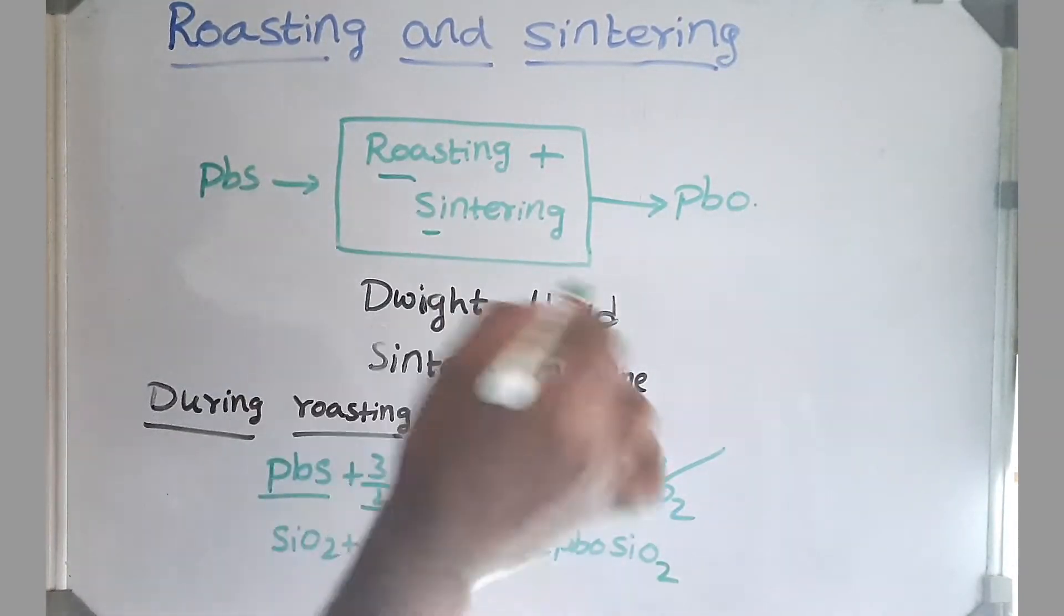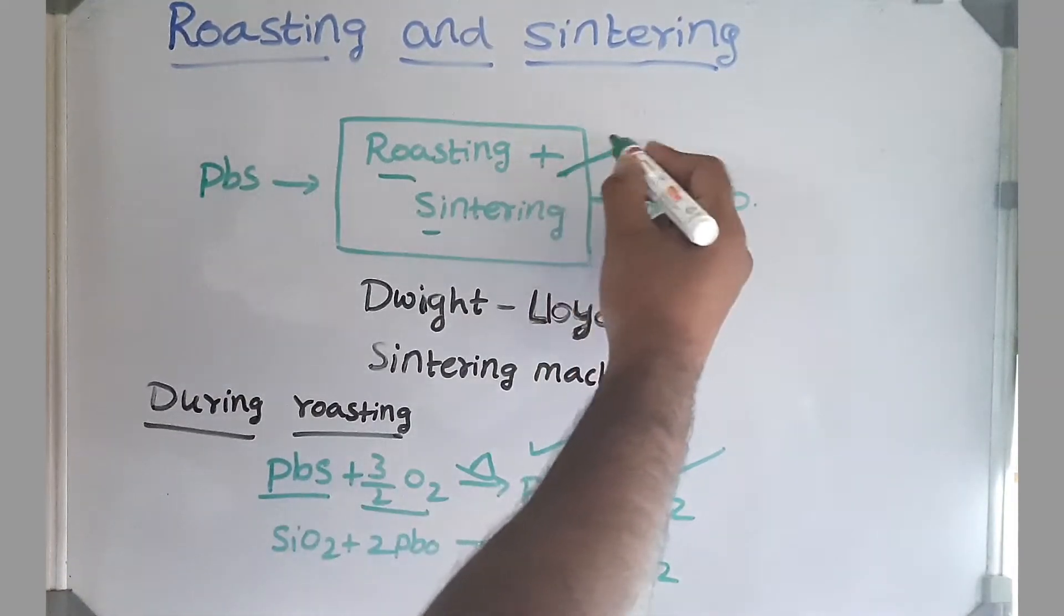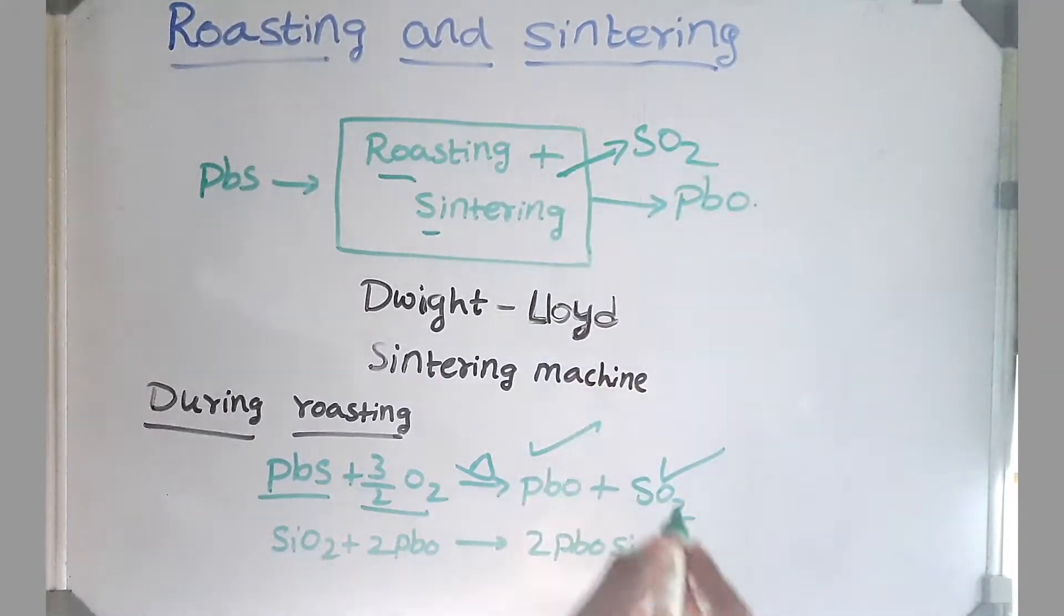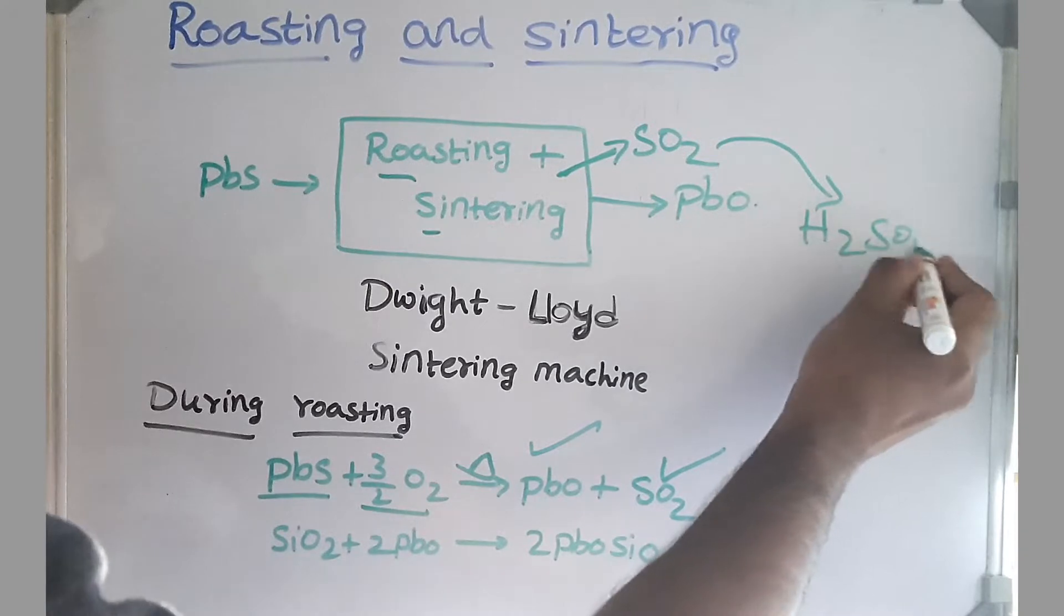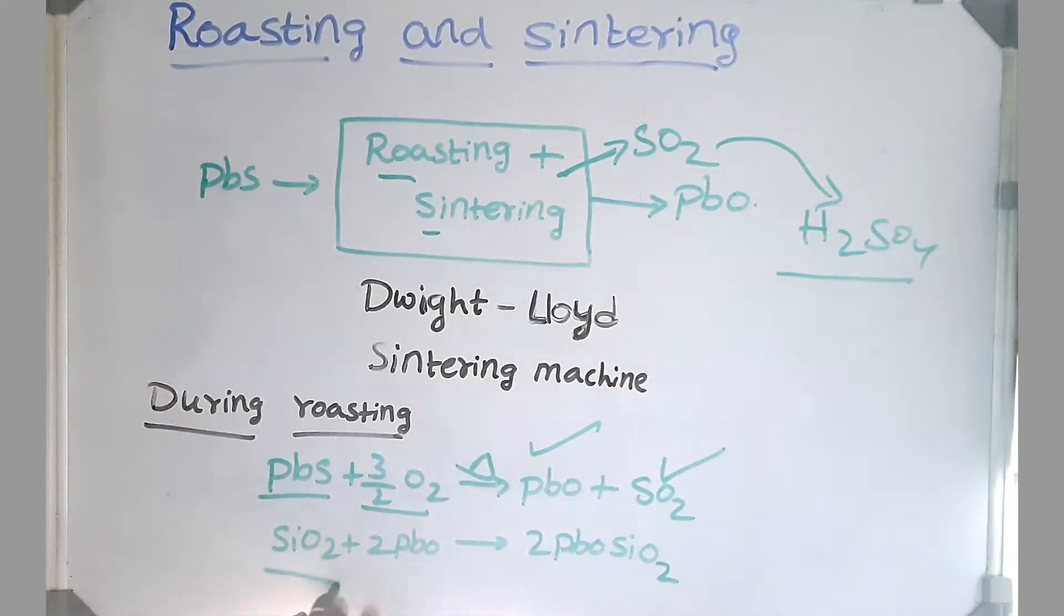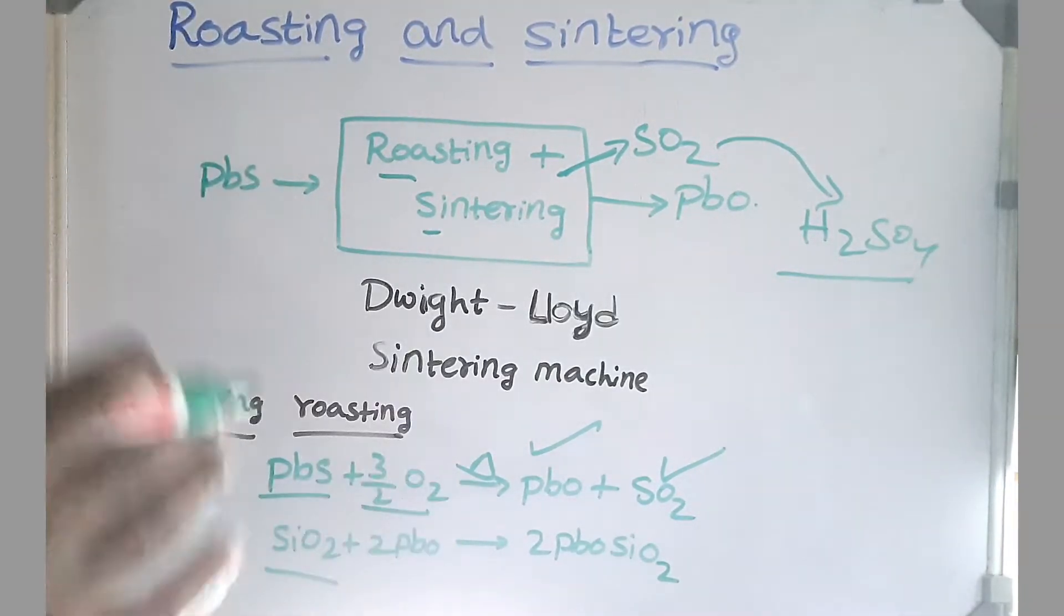Why we are doing both processes in this Dwight-Lloyd sintering machine is this provides better recovery of sulfur dioxide, and we know sulfur dioxide can be used in production of H2SO4. And another reaction is silica. From where this silica is coming? It is coming from the flotation because whenever we do basic leaching, same with alumina leaching as well.